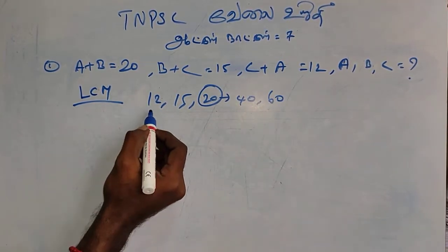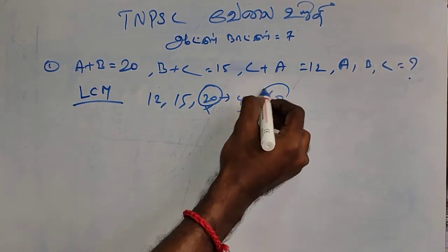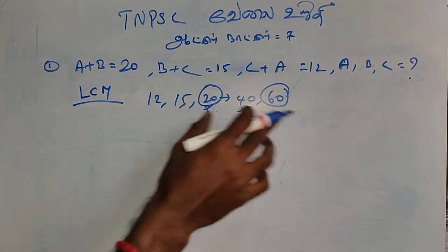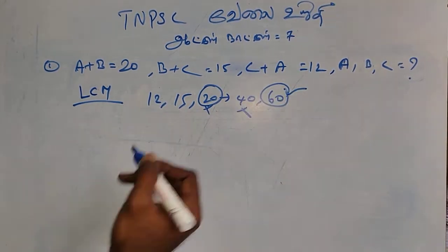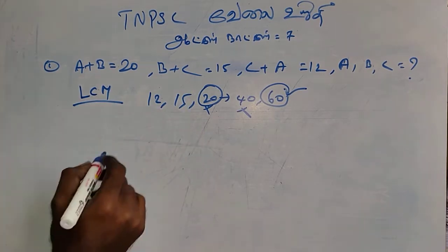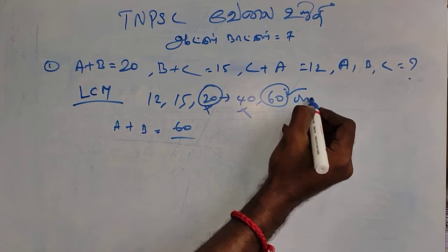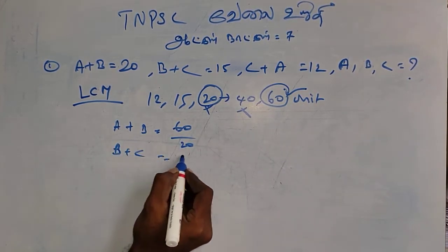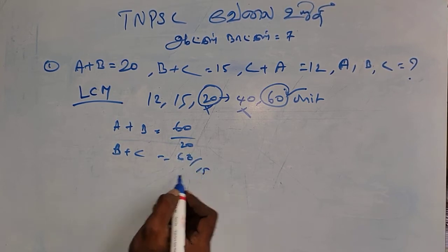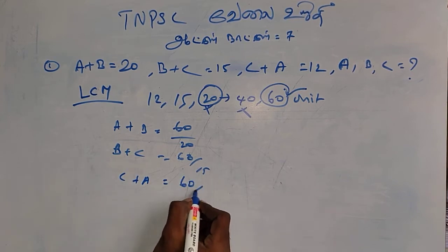If you have 30 LC, but you leave 10 LC, then as usual a plus b LC is 60 unit. 60 by 20, then b plus c 60 by 15, and c plus a 60 by 22.